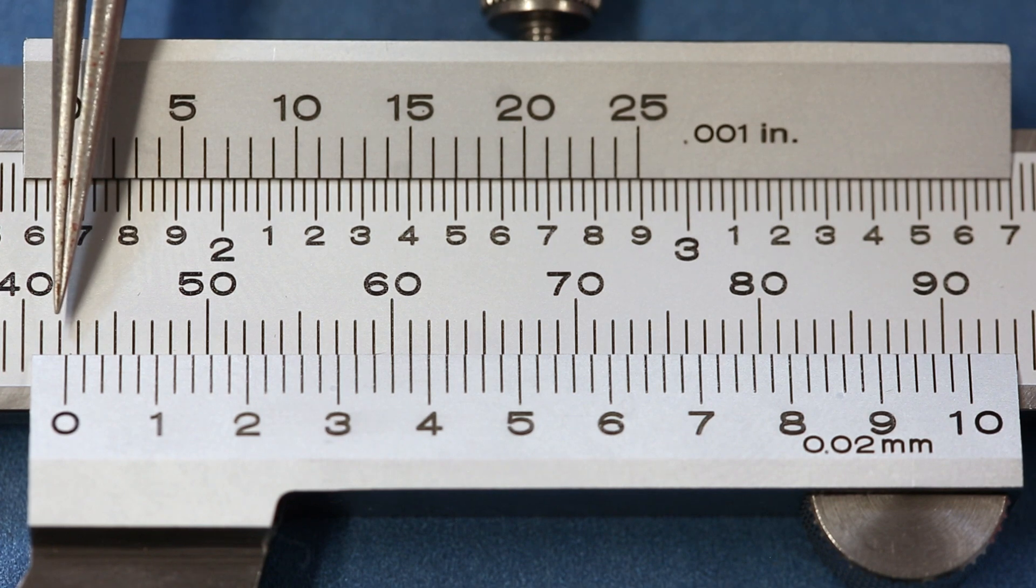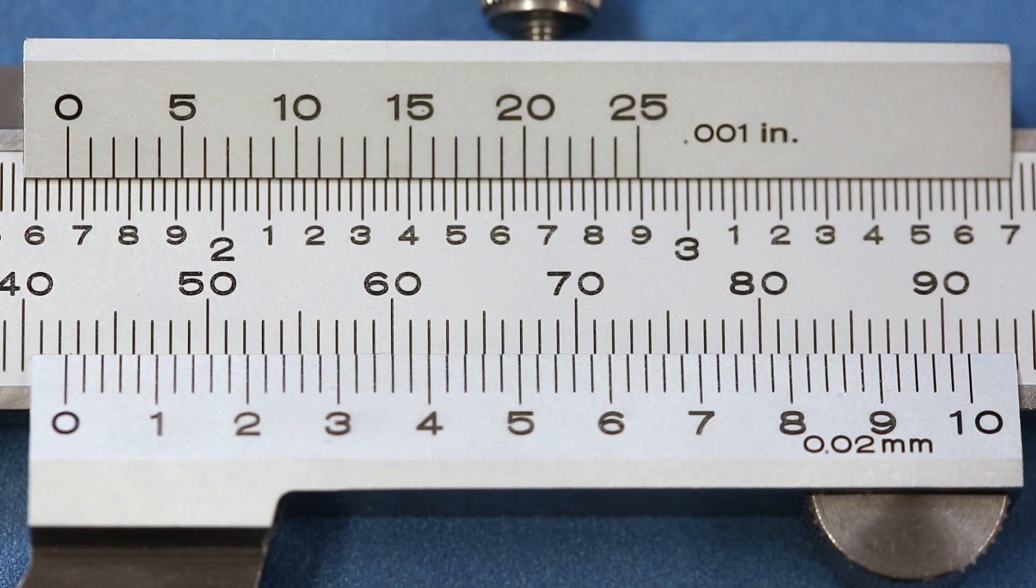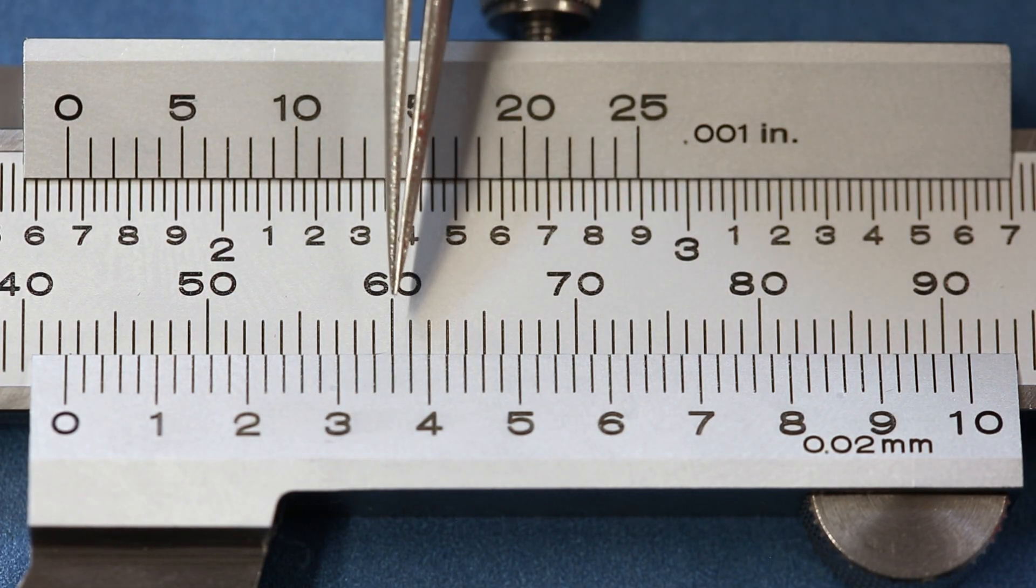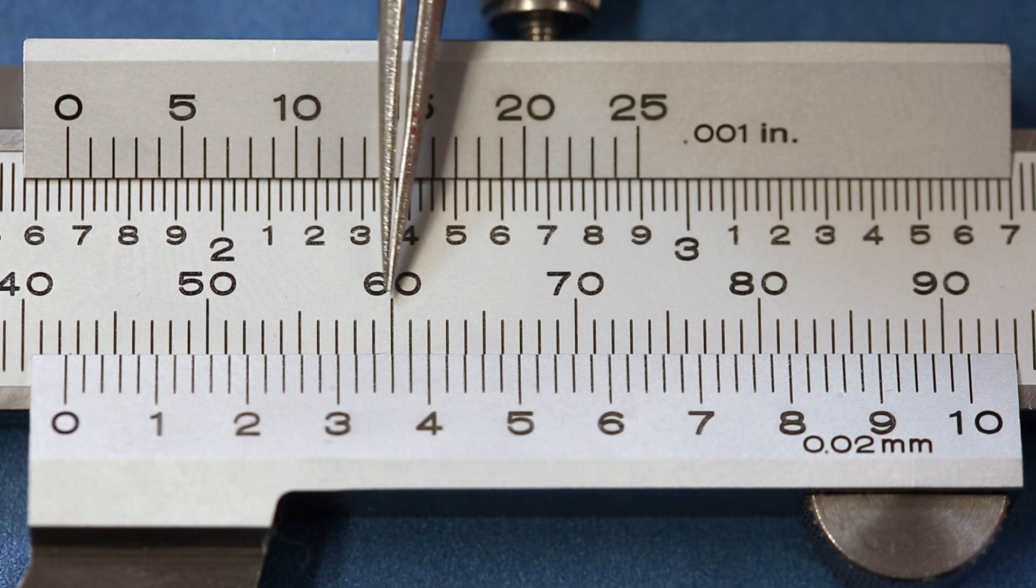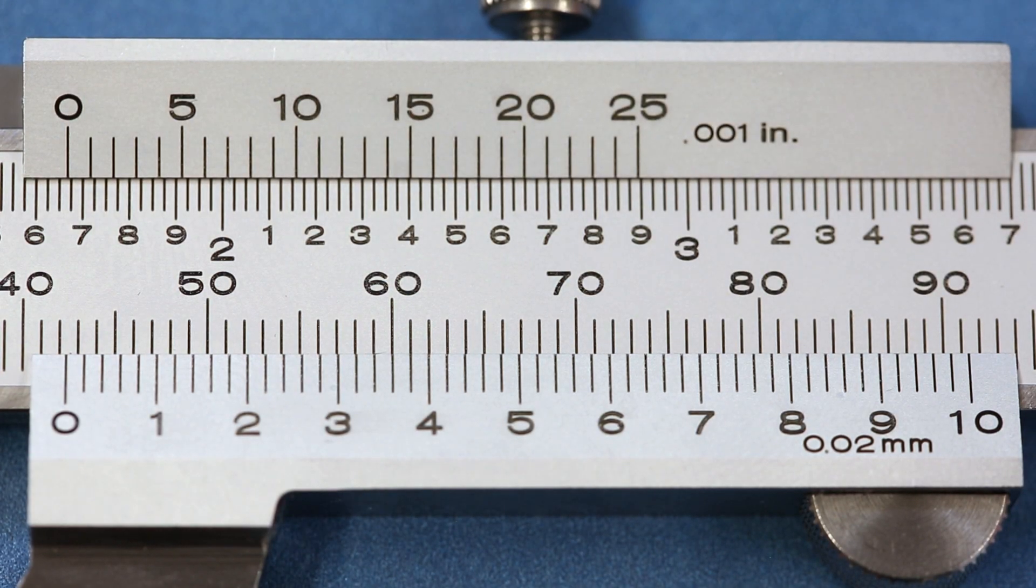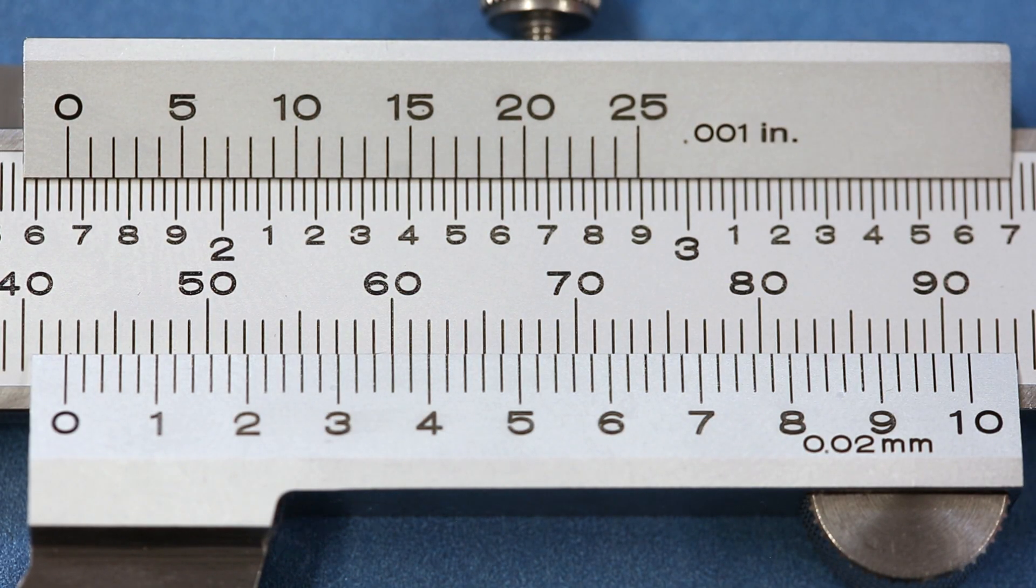Write that number down, which is 42 millimeters in this case. Then carefully look at the lines on the vernier scale and find where one perfectly lines up with a line on the main scale. Write down the reading of that line from the vernier scale, which is 3.6. If the vernier scale on your calipers is marked with an increment, then you can easily figure out what the vernier measurement is and add it to the main scale measurement.